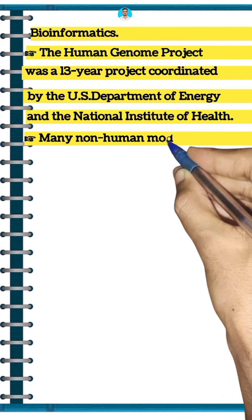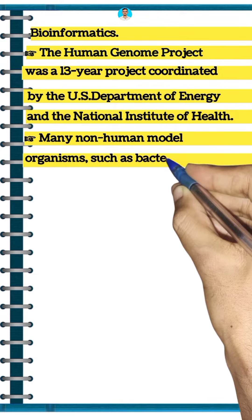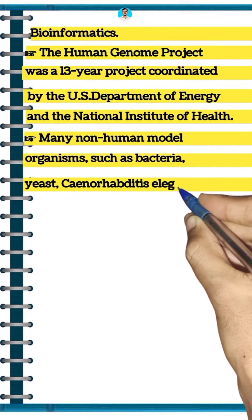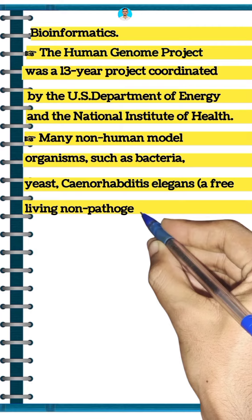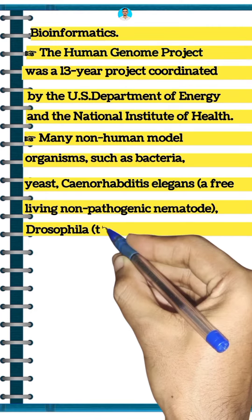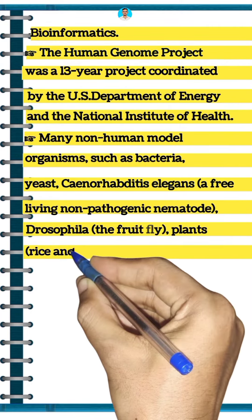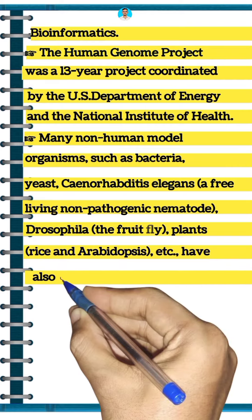Many non-human model organisms such as bacteria, yeast, Caenorhabditis elegans (a free-living non-pathogenic nematode), Drosophila (the fruit fly), plants (rice and Arabidopsis), etc., have also been sequenced.